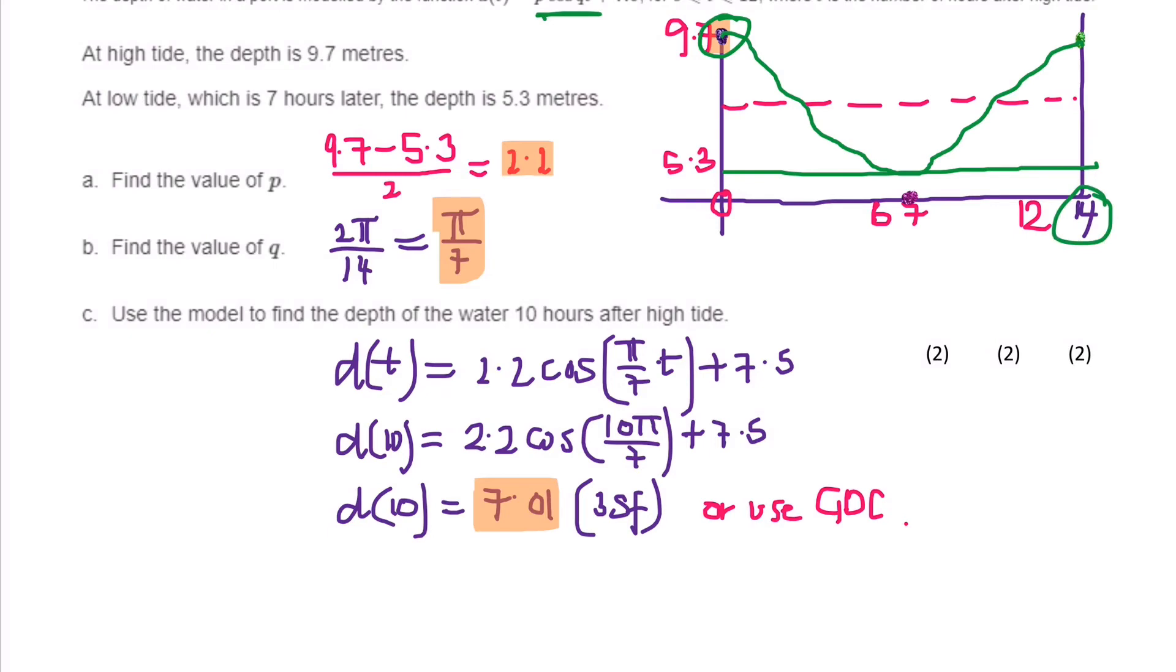And the tricky bit is knowing that the period is 14, because it tells you that low tide which is 7 hours later. So it starts at 0, 7 hours after high tide, it's the low tide down at the minimum. 7 hours, and 6 is half of 12, but it's 7. If you double 7, you're going to get 14. So that means it goes all the way back up to the high tide at 14. So we know that one period was 14. So that gives us the value of q, which is 2 pi over 14, so therefore pi over 7.